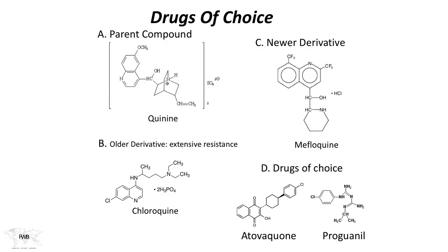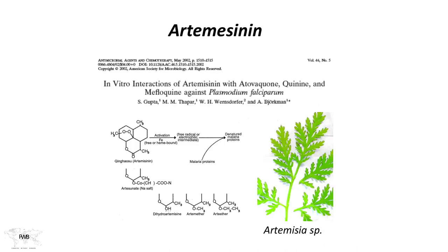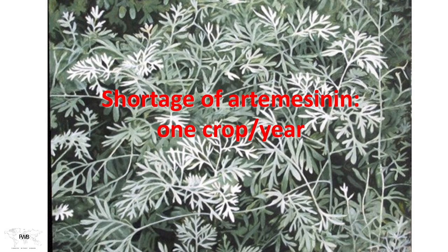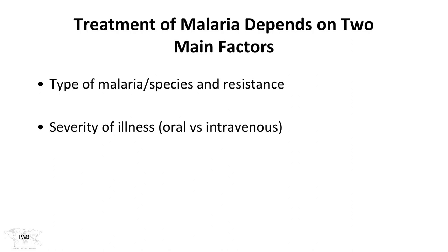The two main factors in treatment decisions are the type of malaria — species and resistance issues — and the severity of illness, determining whether to use oral or intravenous options. Severity classification is straightforward: uncomplicated versus severe malaria.